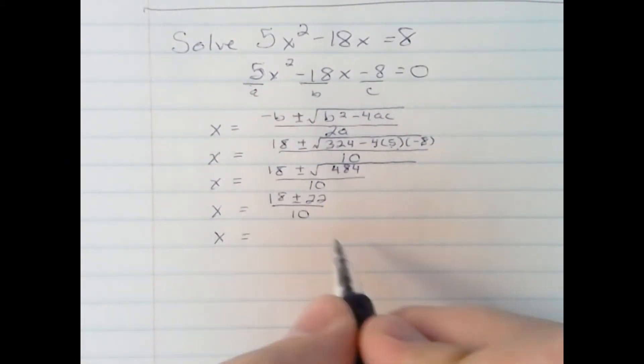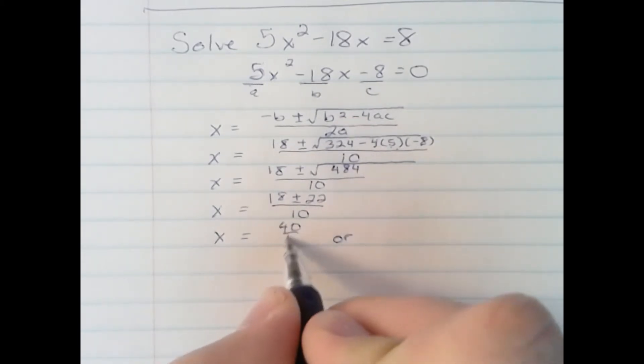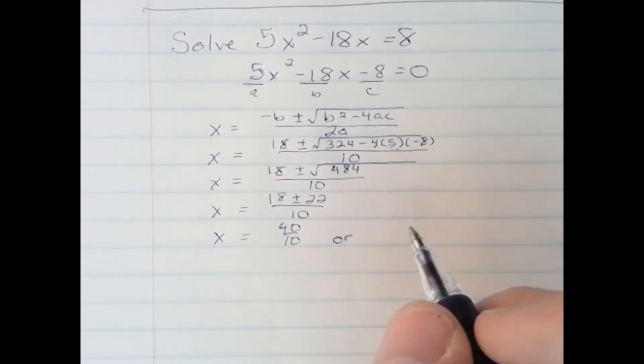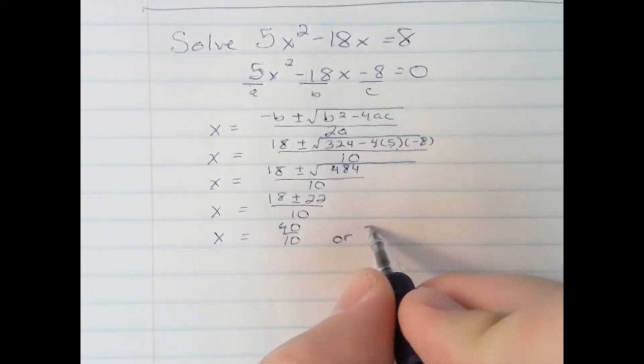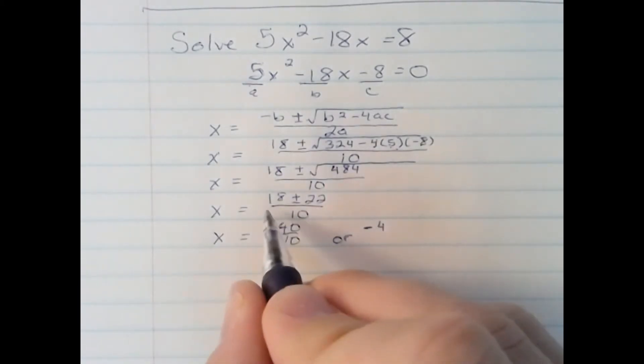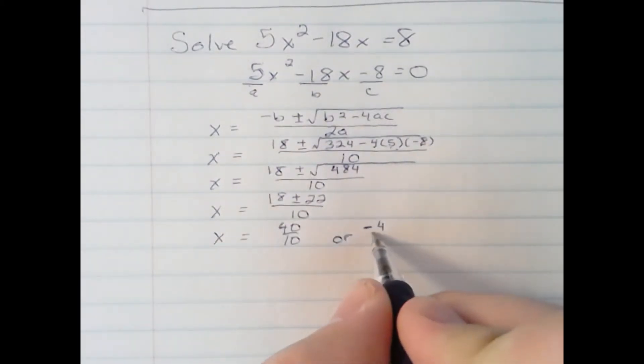Let's do the 18 plus 22 possibility. That would be 40, and that's still over 10. Now if I do 18 minus 22, I get negative 4, and I'm still over the 10.